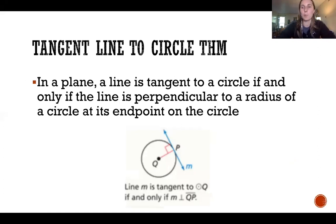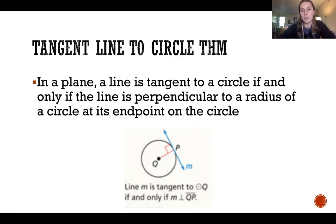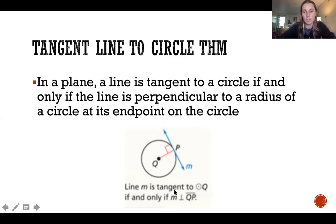So we're going to talk about a couple of theorems. The first is the Tangent Line to a Circle Theorem. In a plane, a line is tangent to a circle if and only if the line is perpendicular to a radius of the circle at its endpoint on the circle. So this line is tangent if the point where it touches the circle is perpendicular to the radius. Line M is tangent to circle Q if and only if it is perpendicular to QP.